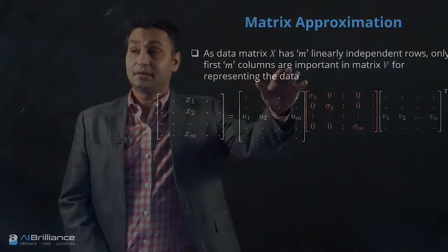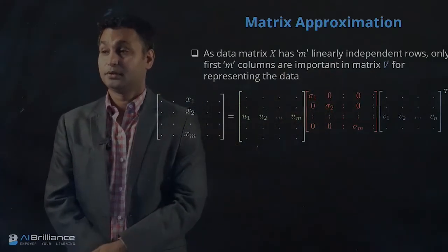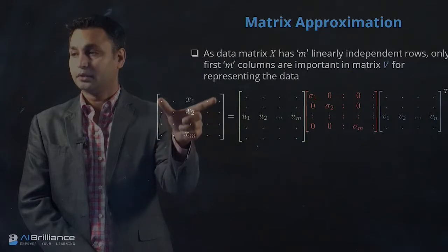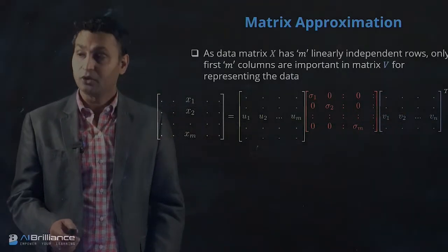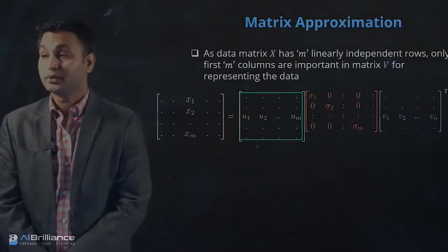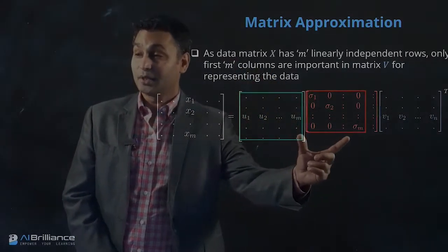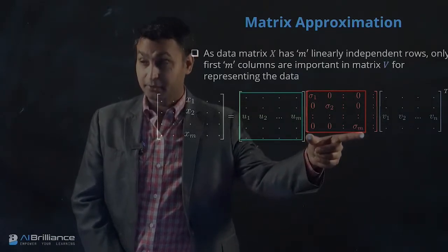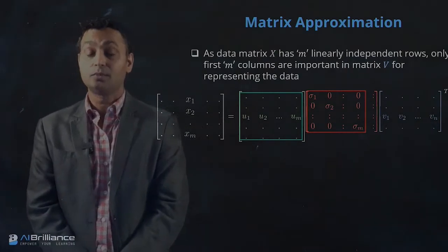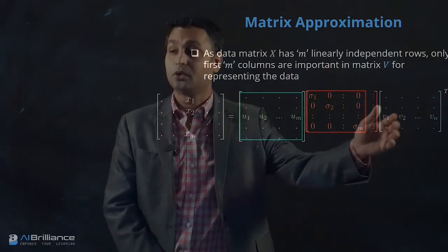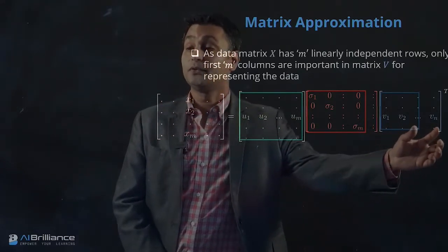Since data matrix X has M linearly independent rows, only the first M columns are important in matrix V for representing this data. Assuming all images are independent, we only need M columns in matrix V. To represent the overall matrix X, we need the whole U matrix, only a sub-portion of the Sigma matrix going from Sigma 1 to Sigma M — all remaining columns in the Sigma matrix are equal to zero and are redundant, so we use only M columns of V and discard the rest.